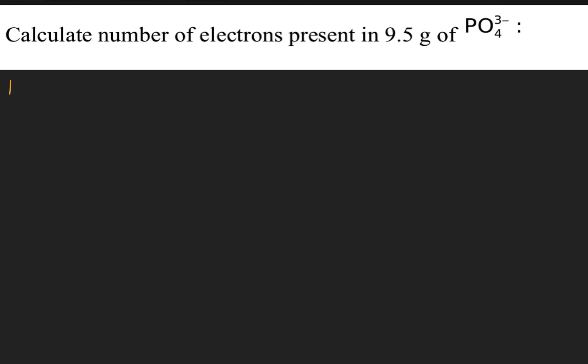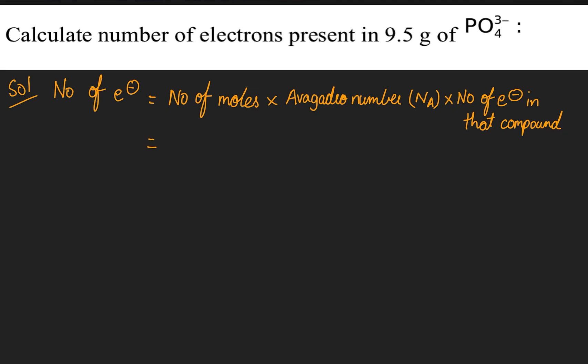Let's start the solution. The formula for number of electrons is equal to number of moles times Avogadro's number times the number of electrons in that compound. If you understand this, we'll substitute the values.